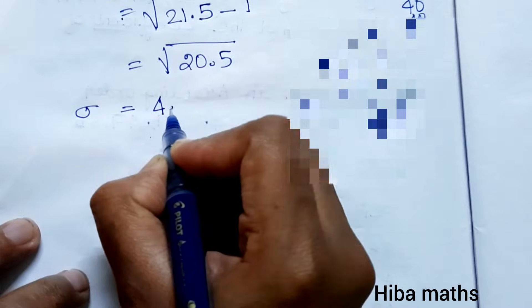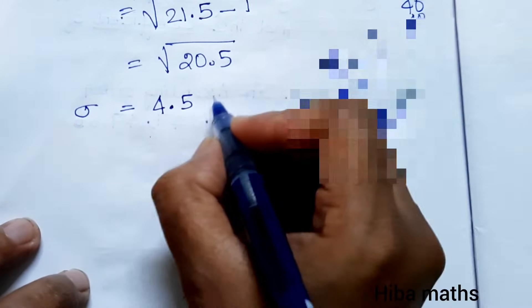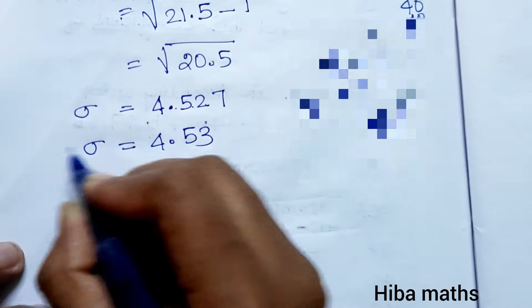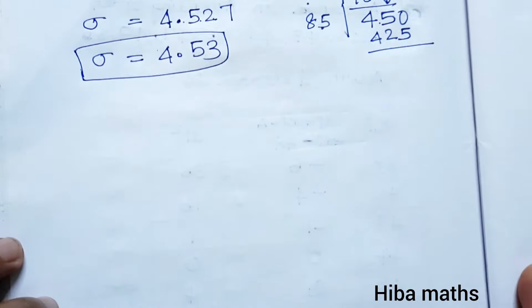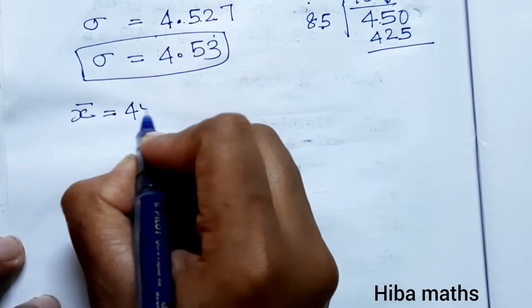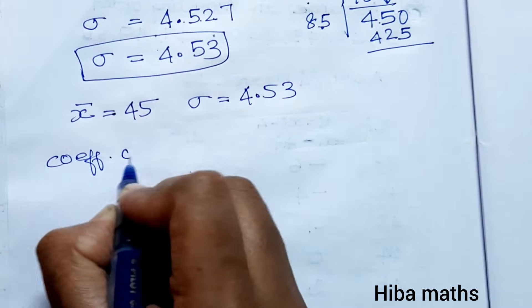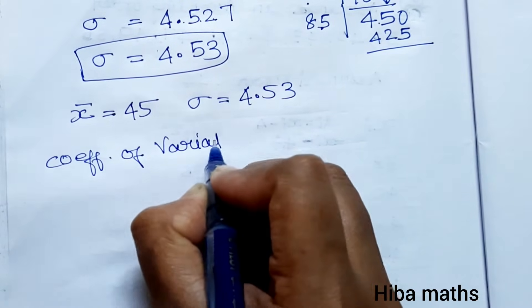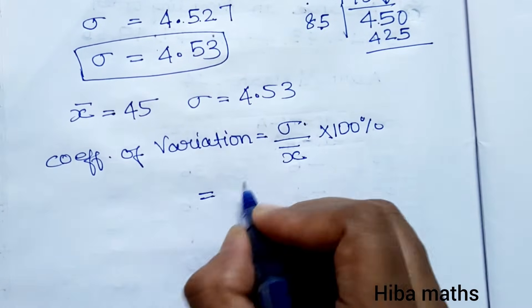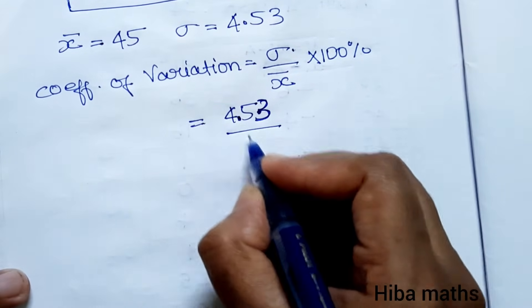Rounding off 4.527, the standard deviation value is 4.53. So mean value is 45 and standard deviation value is 4.53. The coefficient of variation formula is: CV = (standard deviation / mean) × 100%. So CV = (4.53 / 45) × 100%.